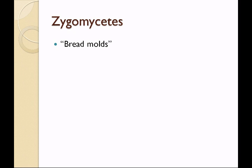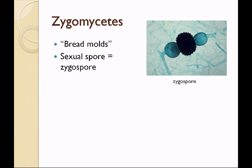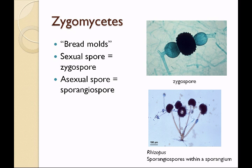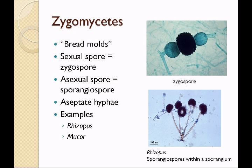The zygomycetes are known as the bread molds, but they grow in places other than bread. They reproduce sexually with a zygospore and asexually with a sporangiospore. The sporangiospore is encased within a sac called a sporangium. They have aseptate hyphae. Examples are rhizopus, which has black spores, and mucor, which has white spores — and we commonly see these growing on bread.